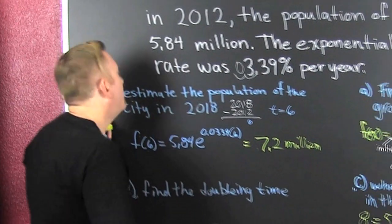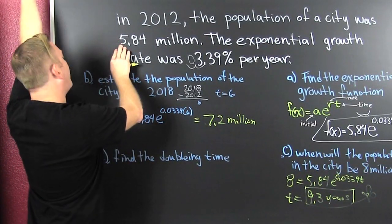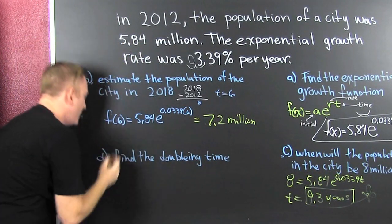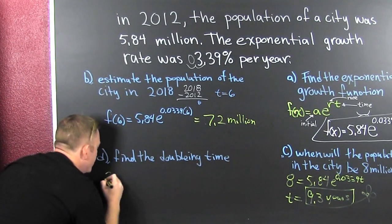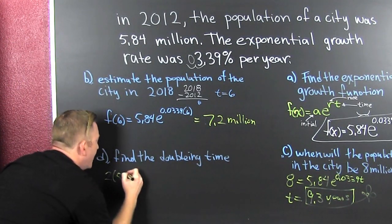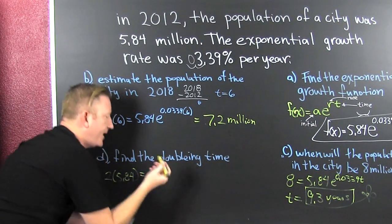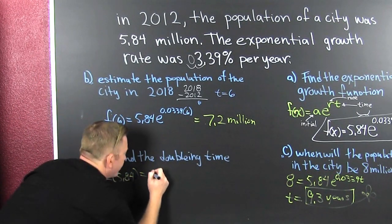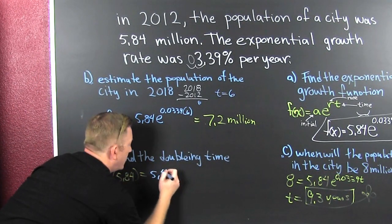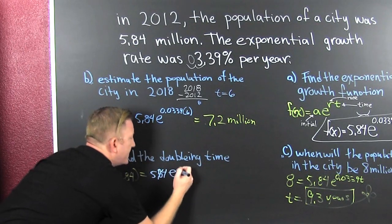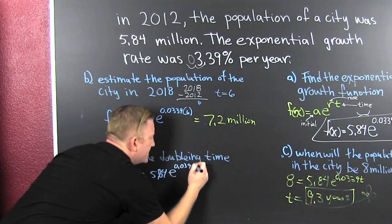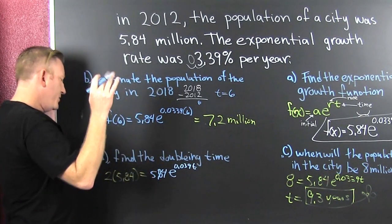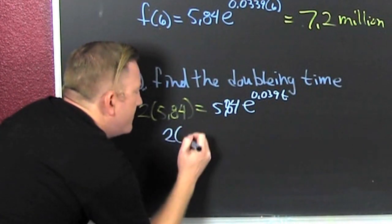We want to find the doubling time. What do they mean? We're talking about it was at 5.84 and we want twice that. We can do 2 times 5.84, that's going to be equal to 5.84·e to the 0.0339t. And then we can solve for t, or we can do it generally. If we had 2 times a equals a·e to the rt — using that general form — whatever a was, e to the rt.